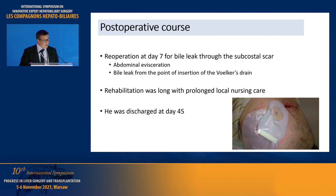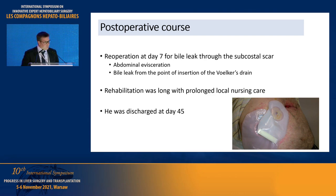We placed a drain using the Volcker method in the hepaticojejunostomy to guarantee good healing after surgery. Unfortunately, at day seven we feared recurrence of the fistula because of a bile leak through the subcostal scar with evisceration, which required a further reoperation. The origin was not a recurrence of the bronchobiliary fistula but the point of insertion of the Volcker drain, which needed to be sutured.